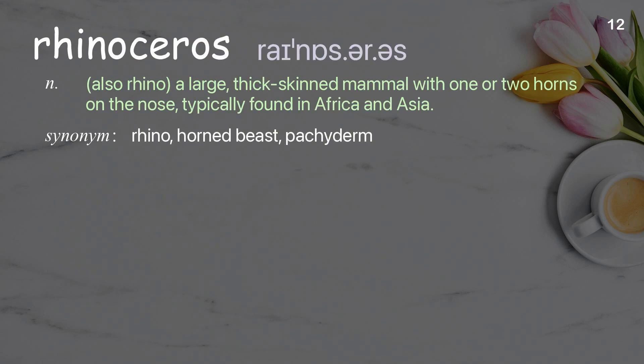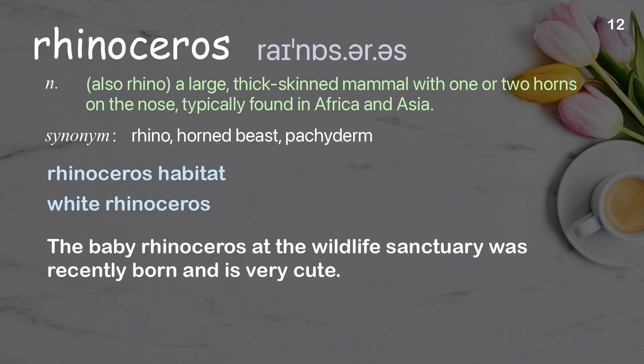Rhinoceros (also rhino): a large, thick-skinned mammal with one or two horns on the nose, typically found in Africa and Asia. Examples: rhinoceros habitat, white rhinoceros. The baby rhinoceros at the wildlife sanctuary was recently born and is very cute.